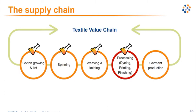Something very important that both certifications cover is chain of custody and traceability of a product. It is essential that even if a product arrives to you as organic, you understand the whole textile value chain and the traceability of that product, because a textile supply chain can be very complex.